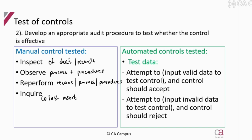To test automated controls, you can still use some manual testing methods. For example, a log is a report of what has happened — you can inspect that log to see whether controls were working, or inspect an exception report to see whether a control was overridden. Don't assume that because it's an automated system you'll only use automated tests — you will still use manual tests for many automated controls.